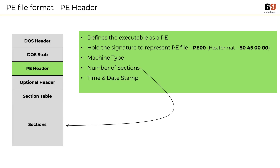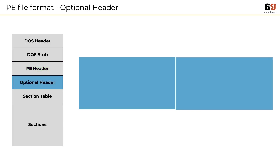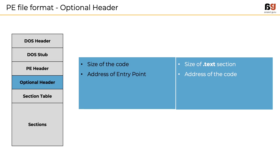Additionally, we can get the date and timestamp of when the file was compiled. The PE header part also holds the size of the optional header. Next is the optional header, which consists of information like the size of code — referring to the specific section called .text — and the address of the entry point, which is the address in memory where the PE loader will begin executing. This is very important during malware analysis as it tells exactly where the code begins. It also includes the preferred base address, which is the address of the first byte of the image when loaded into memory; it must be a multiple of 64K, and the default for recent versions of Windows is 0x00400000.